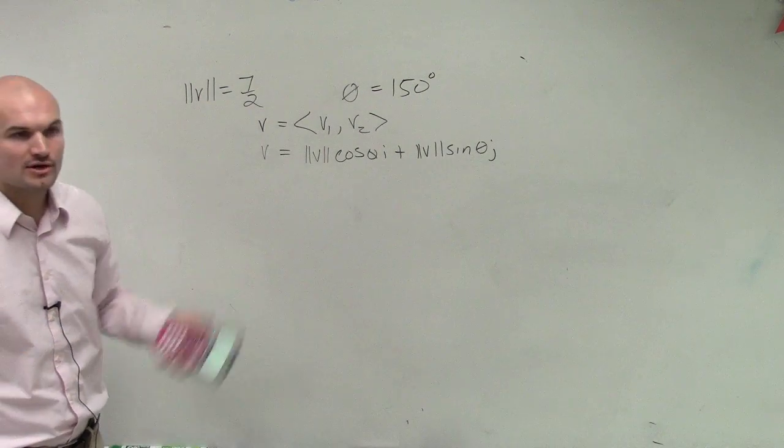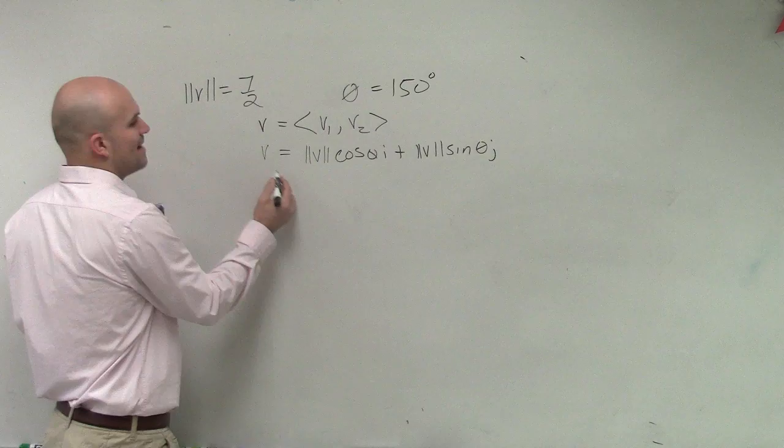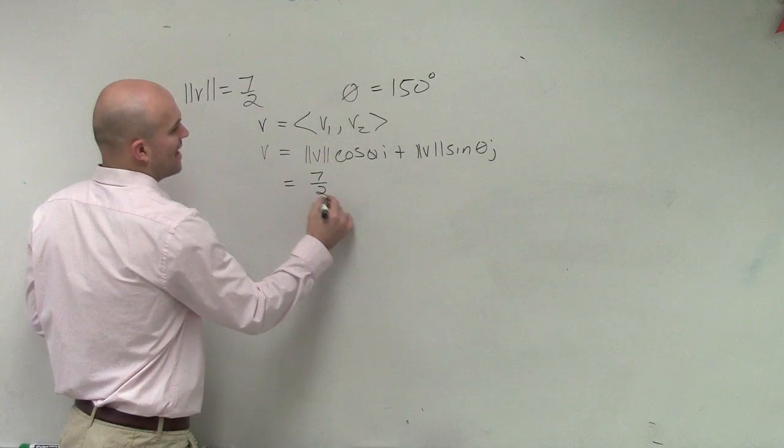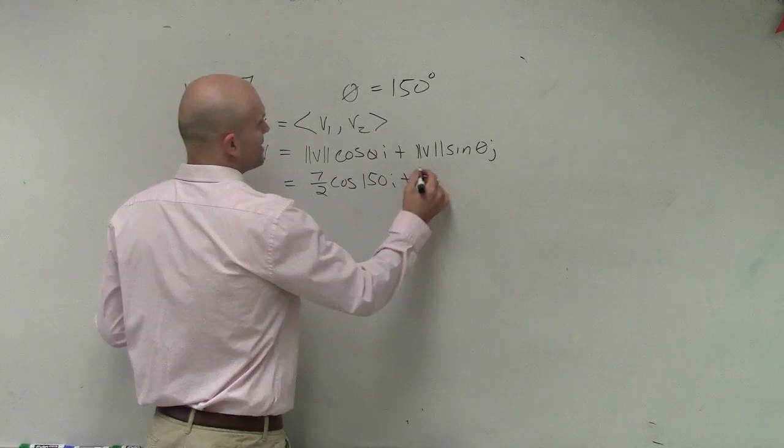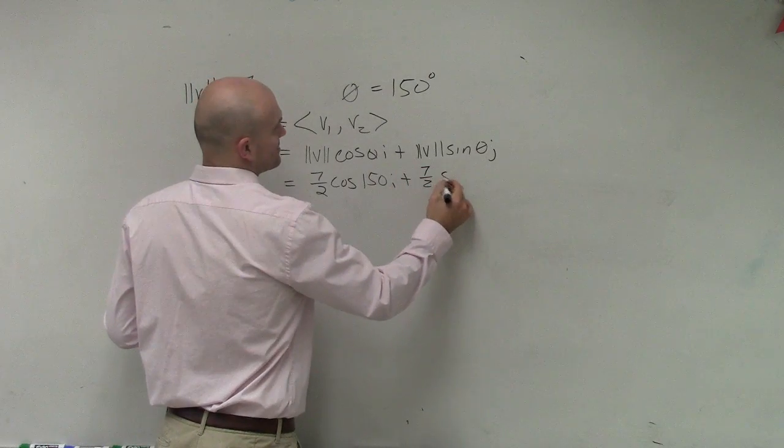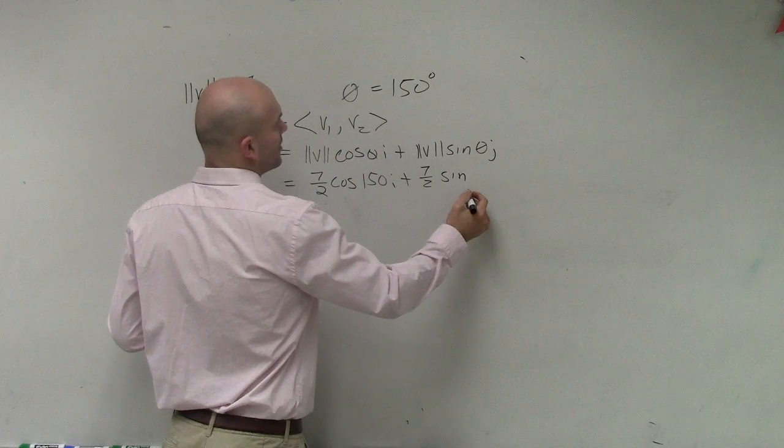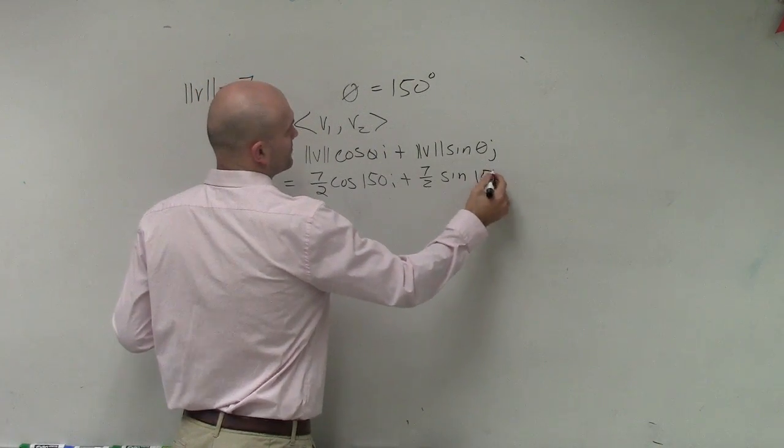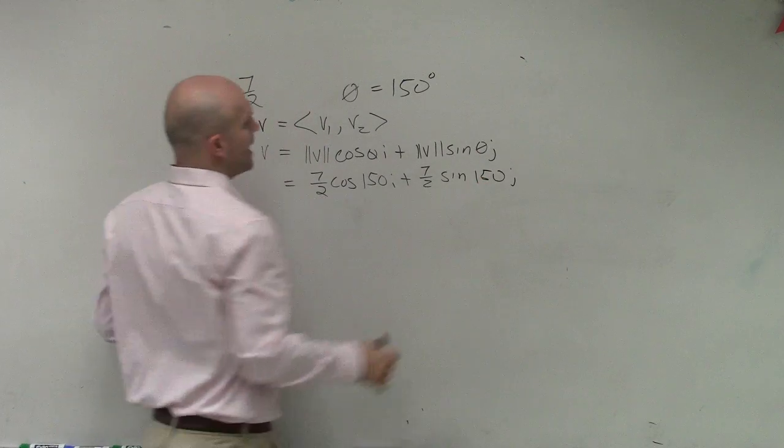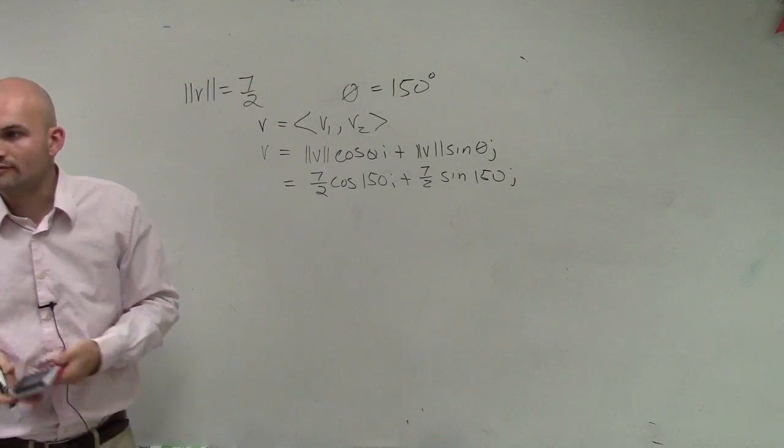Well now, you notice we actually have all the elements we need. The magnitude equals 7½ times the cosine of 150 i plus 7½ times the sine of 150 j. So now, let's go and figure out what it would be like in component form.